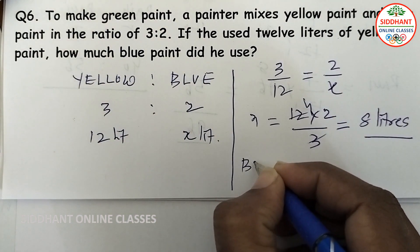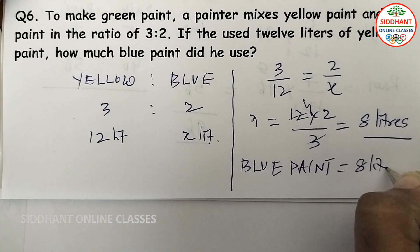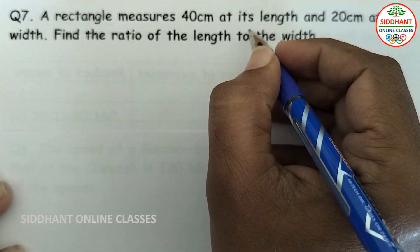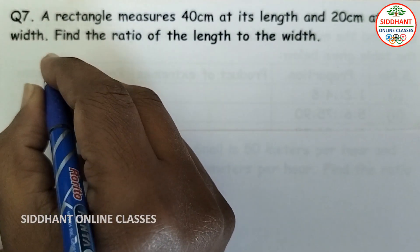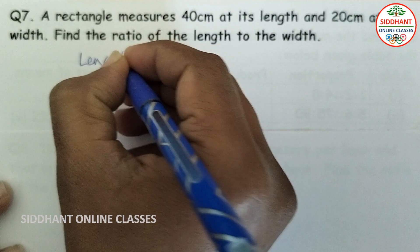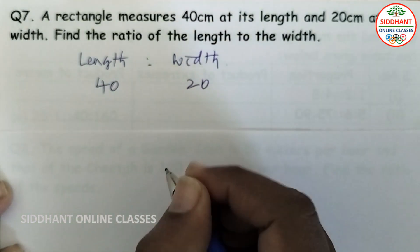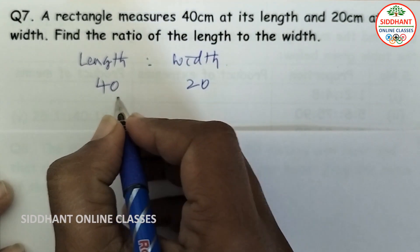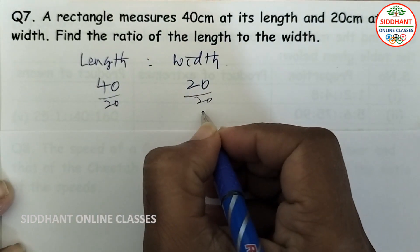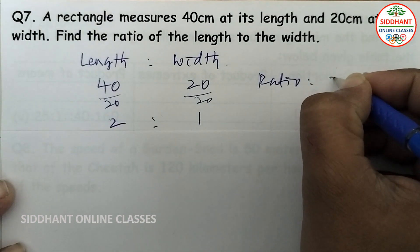Question number 7: A rectangle measures 40 centimeters in length and 20 centimeters in width. Find the ratio of length to width. Length is to width — 40 is to 20. When you divide both by 20, you get 2 is to 1. So the ratio in its simplest form is 2 is to 1.